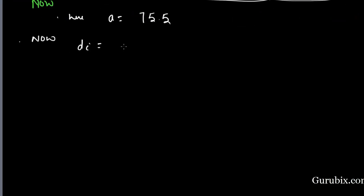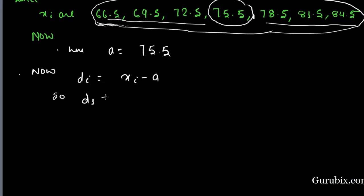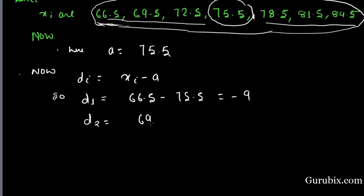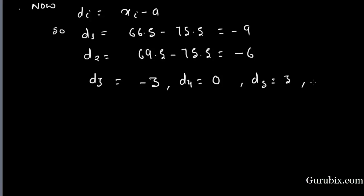di is equal to xi minus a. So d1 is equal to 66.5 minus 75.5, which is equal to minus 9. Similarly, d2 is 69.5 minus 75.5, equal to minus 6. Similarly, we can find the remaining di values: d3 is minus 3, d4 is 0, d5 is 3, d6 is 6, and d7 is 9.